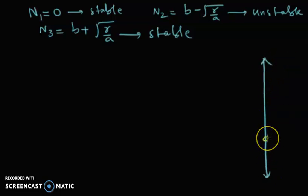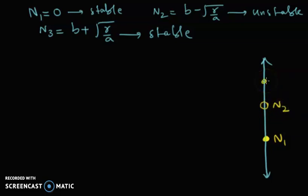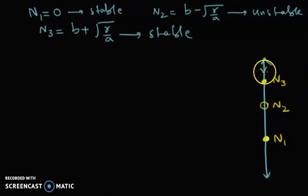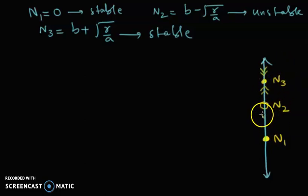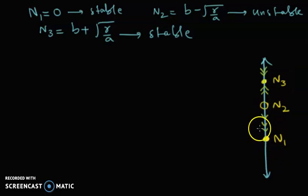So this is n1 which is stable, then n2 over here which is unstable, and then n3 which is stable. For the stable case, the flow should look this way. In other words, n3 is an attractor and n2 is a repeller or unstable. n3 is a sink, n2 is a source, and n1 is also a sink.